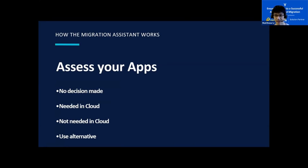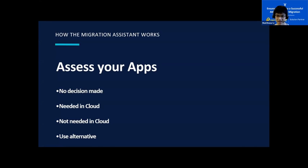There are four statuses and each app must be assigned one. The migration of apps and app data is handled by the vendor, not by Atlassian. The first status, 'no decision made,' is the default and will not migrate the app data. The second status, 'needed in cloud,' means you need to migrate this app and its data to a cloud instance — the assistant will try to migrate the app along with its data and generate a log. 'Not needed in cloud' means the app does not need to be migrated. And the 'use alternative' status will allow you to select an alternative app to replace the current one.